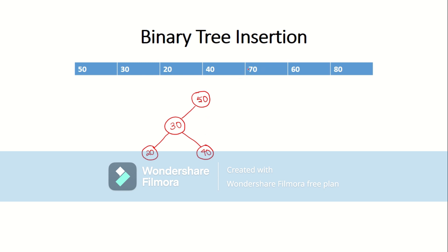The next element to insert is 70. 70 is greater than the root, so you travel to the right side. The next number is 60. 60 is greater than 50, so travel along the right side. Now, 60 is less than 70, so you have to insert it in the left part.